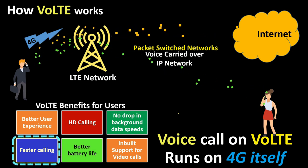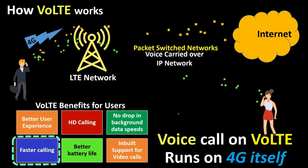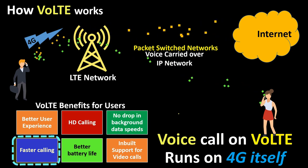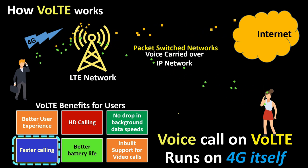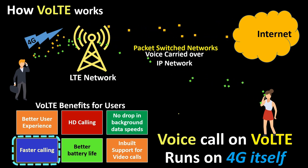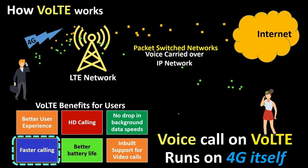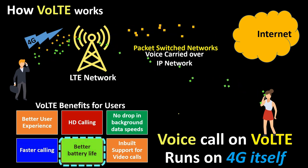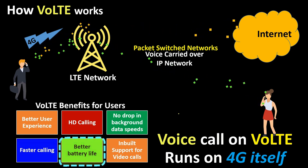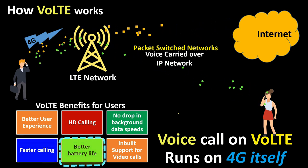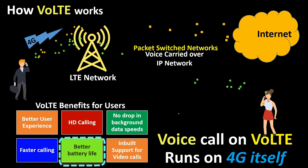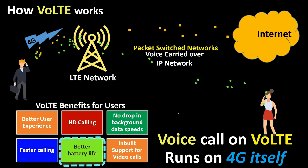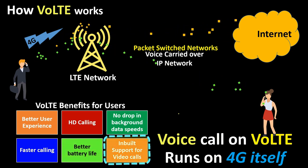Another great benefit is faster calling. A VoLTE network connects calls faster than any legacy network — a normal 3G call takes 4 to 6 seconds but a VoLTE call requires less than 1 second to connect. Additionally, better battery life: since your phone is not changing networks between 4G and 3G or 2G for voice calls, users save a couple of amperes and battery life with VoLTE.